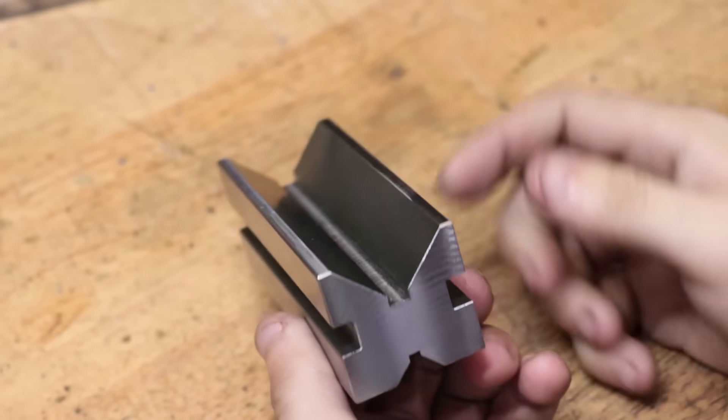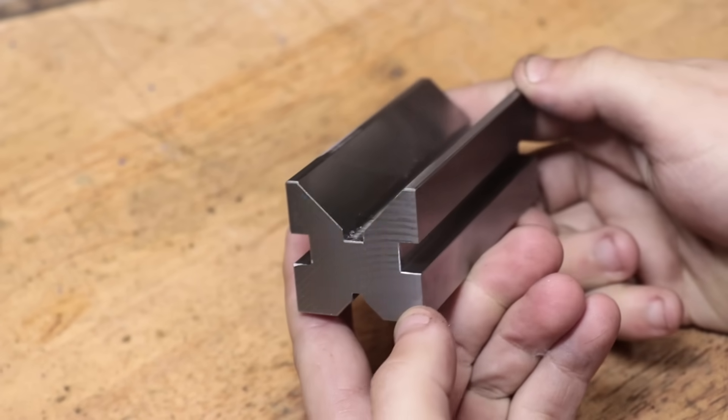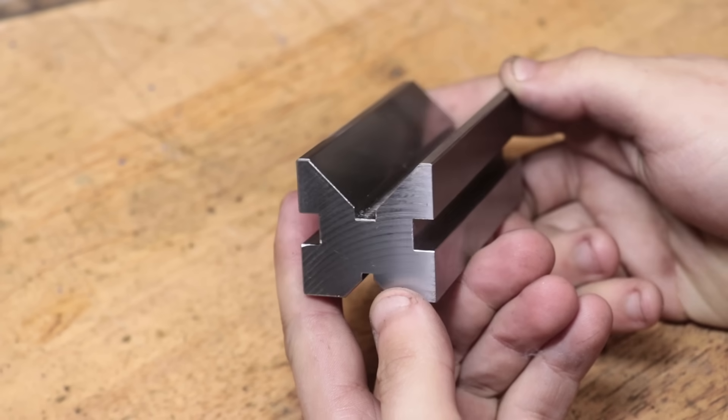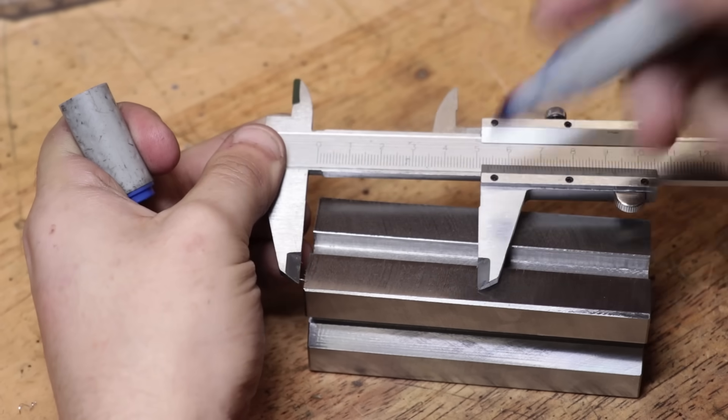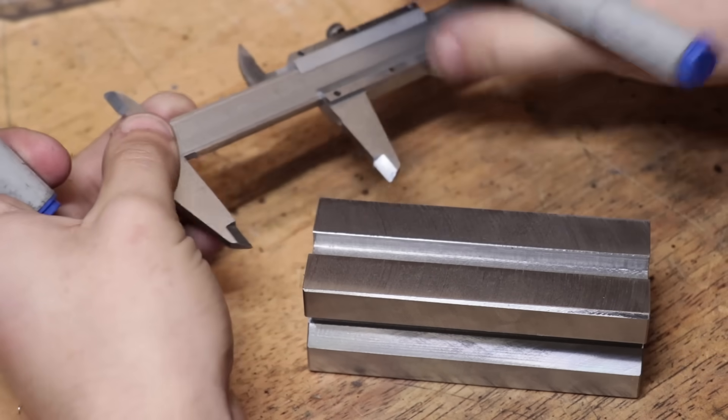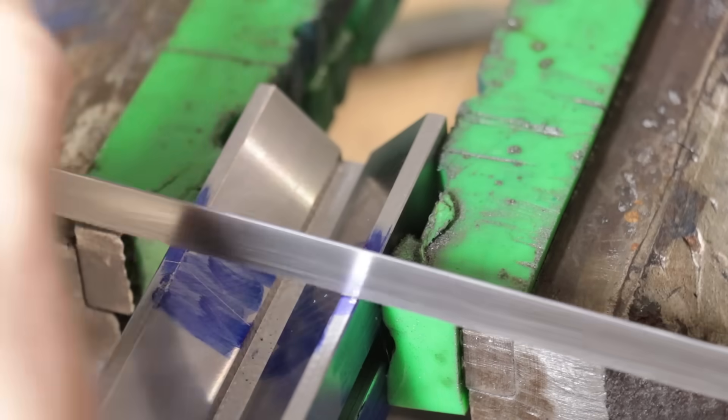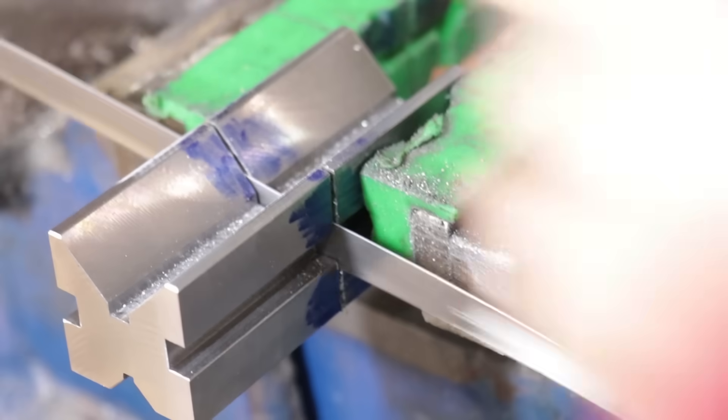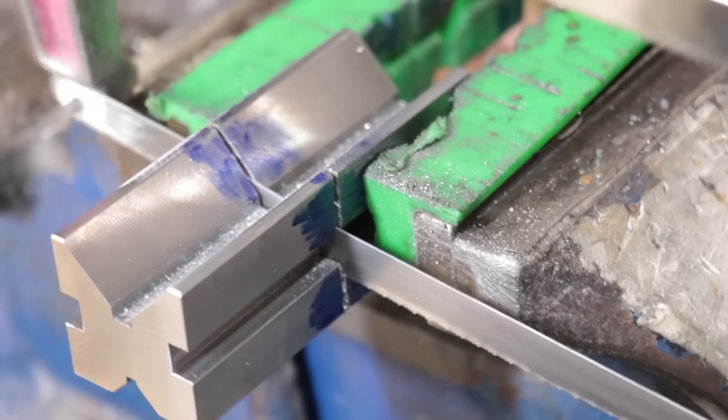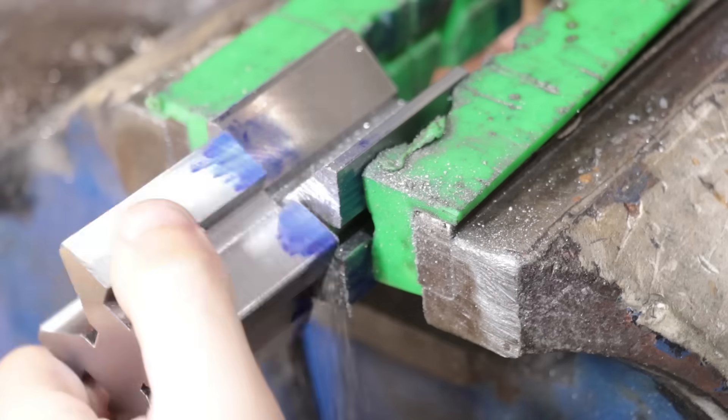Well so far the V-block is looking really good and with most of the machining done I can now cut them in half. Now I could have left it as one piece, longer V-blocks are a thing and they do have their uses, but personally at the moment I feel that I can get better use from two smaller V-blocks than I could from one big one.